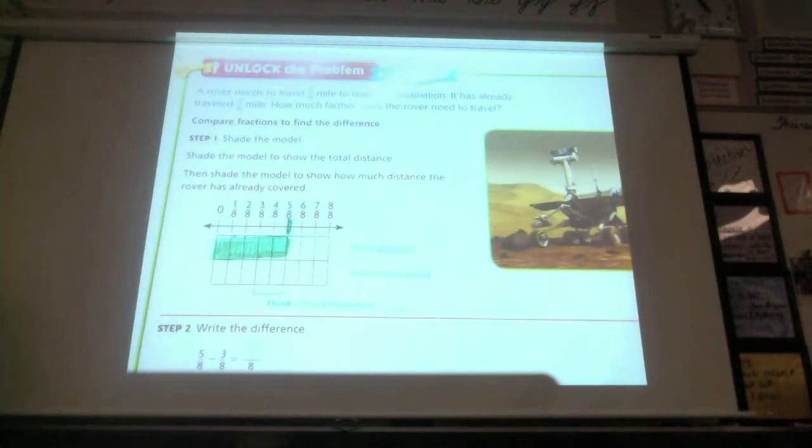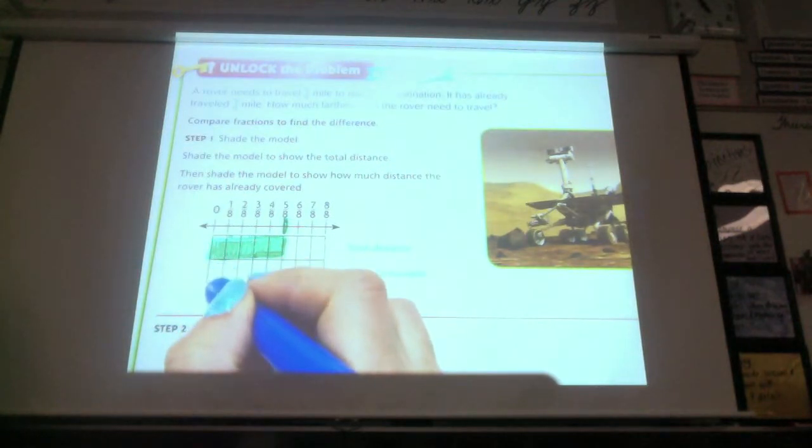The next one says then shade the model to show how much distance the rover has already traveled. Look back in your directions and find out, or in the problem, and find out how much has it already traveled? Raise your hand when you can tell me. Okay, how far has it already traveled? Three. So how many boxes am I going to shade? Three. Three. Go ahead and do yours.